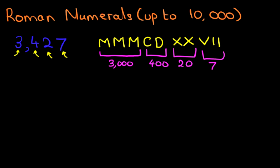So 3,427 in Roman numerals is MMMCDXXVII. And that's it. It really is that simple.